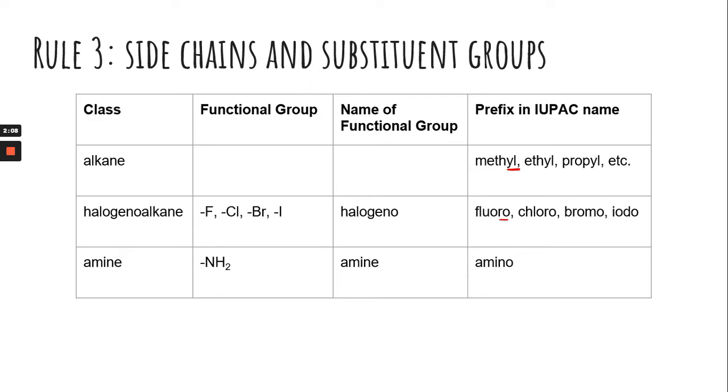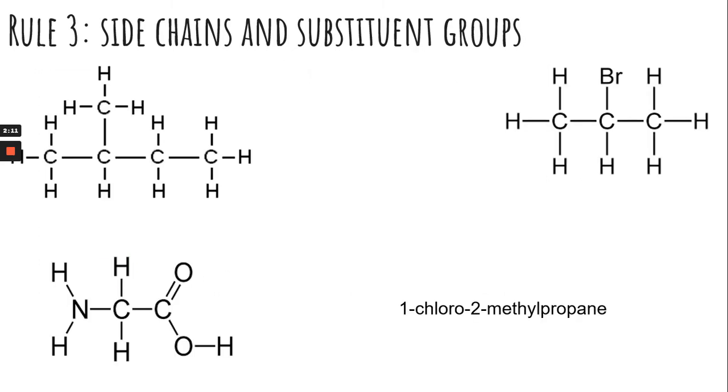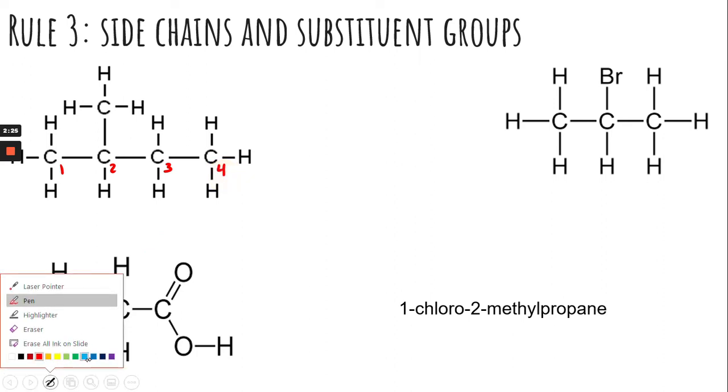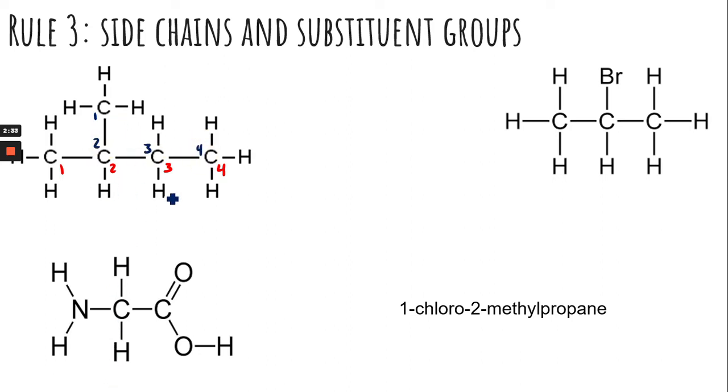Now we're going to look at some examples. All right. So if we start up here at the top, the first thing that you need to do is find your longest chain. So we could number the carbons like that. We can number them like this. So there's no longer chain. It doesn't matter if we're starting and going straight across or if we're going from top and over.